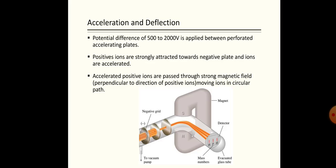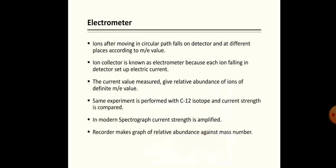In this way, when the magnetic field moves ions in a circular path, ions of different masses fall at different places on the detector. These ions are collected, and this ion collector is known as an electrometer, because each ion falling on the detector produces an electric current, and the strength of that current represents the relative abundance of the ions.